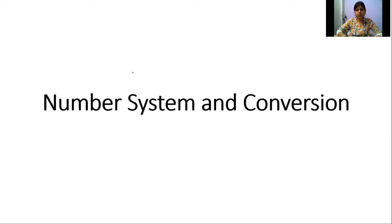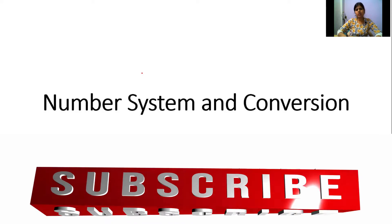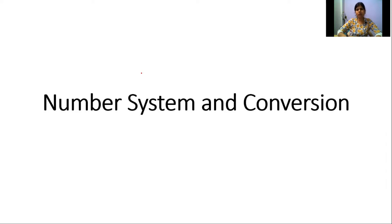Welcome back. As in the previous video, we have already discussed the syllabus of the subject Computer System Architecture and also some prerequisites: number systems and conversion, data representation, and arithmetic operations. Now we are going to start with the very first prerequisite, that is number system and conversion. The standard number systems in computer science are binary, octal, hexadecimal, and decimal, and we will see their conversions.